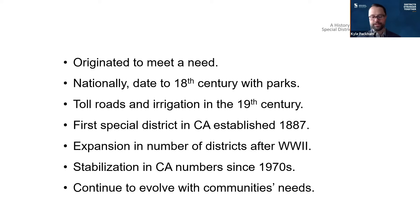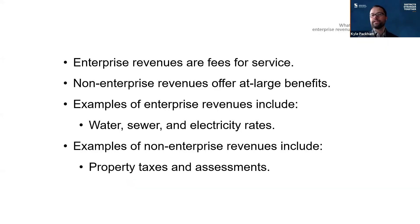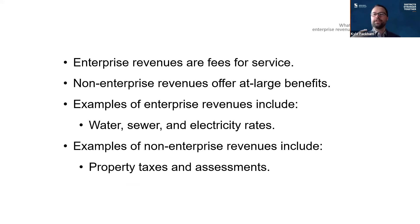Special districts continue to evolve with the community's needs — they are formed, dissolved, and reorganized or consolidated every year throughout the state. Their funding comes from two sources: enterprise revenue from various fees and rates, as well as non-enterprise revenue from things like property taxes and assessments. Overall they receive about eight percent of the state's property tax base, which is a very small percentage given the number of people they're serving and amount of services provided. That diverse revenue portfolio matters in times like this with a pandemic — where you have emergencies, where you need reserves. It matters in times of drought, and in developing and sustaining infrastructure in good times and in bad.